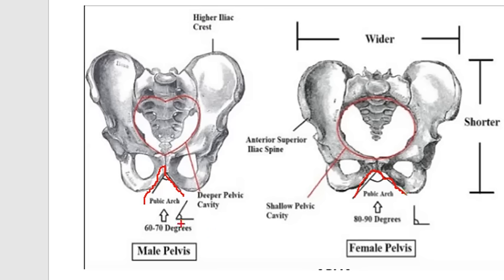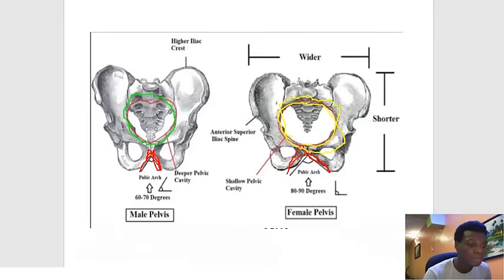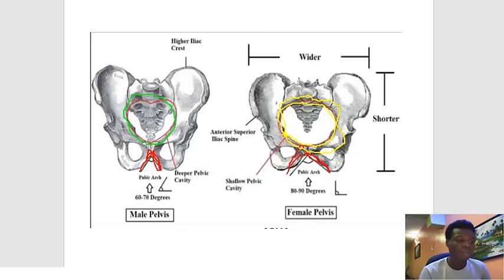Once you notice the subpubic angle is smaller, that is a male pelvis; if it is wider, that is a female pelvis. Another way is to look at the pelvic brim or pelvic inlet. In a male pelvis the pelvic inlet is more or less triangular, but in a female pelvis it is wide and oval-shaped. These anatomical features of the female pelvis are modified to allow childbirth.